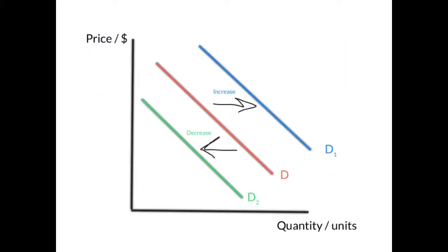An increase in demand is represented by a shift to the right from D to D1. A decrease in demand is represented by a shift to the left from D to D2.